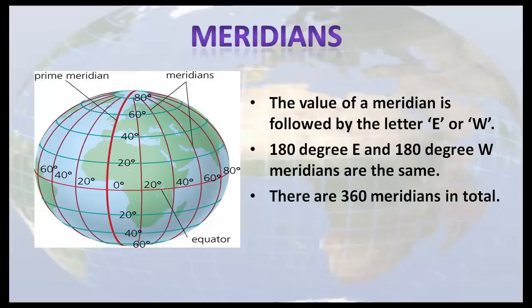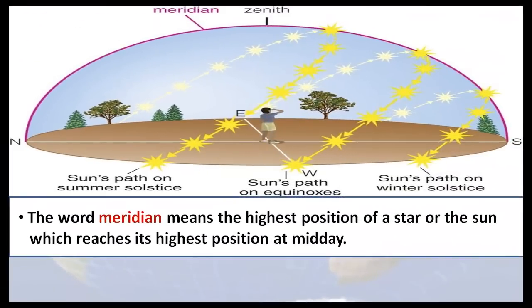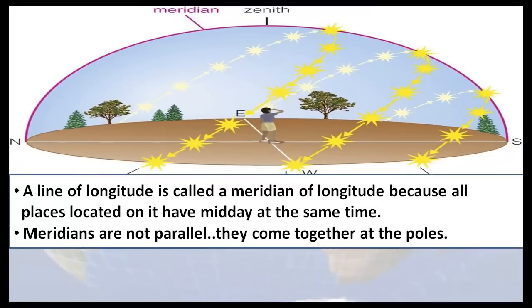The value of a meridian is followed by the letter east or west. 180 degree east and 180 degree west meridians are the same. There are 360 meridians in total. The word meridian means the highest position of a star or the sun, which reaches its highest position at midday. A line of longitude is called a meridian of longitude because all places located on it have midday at the same time.